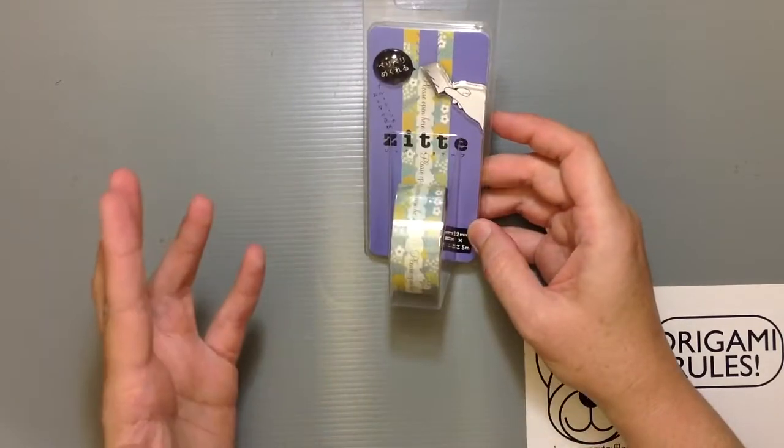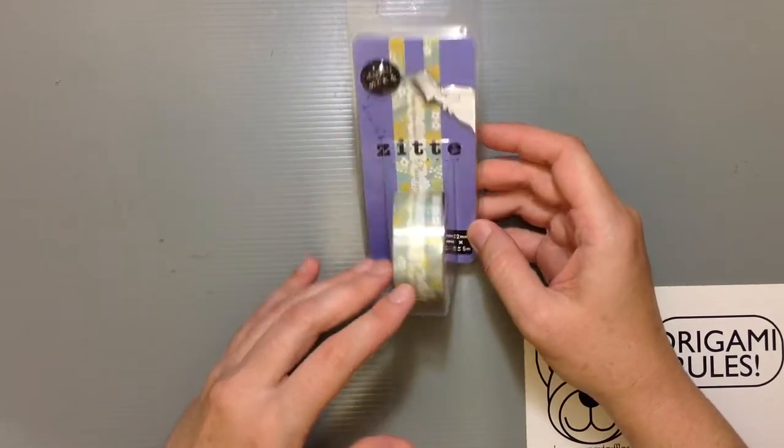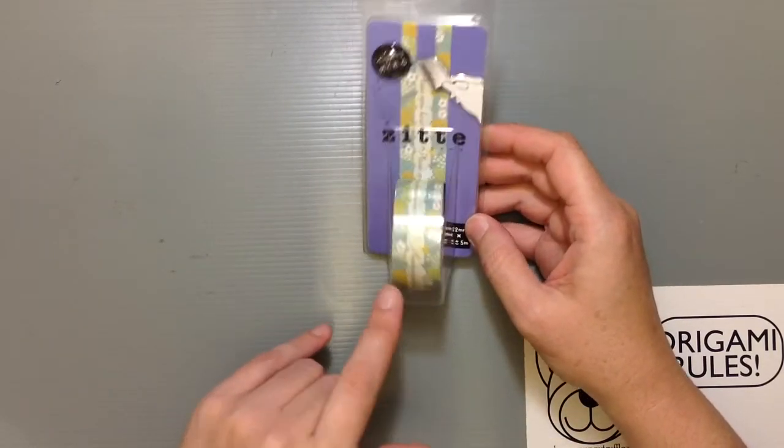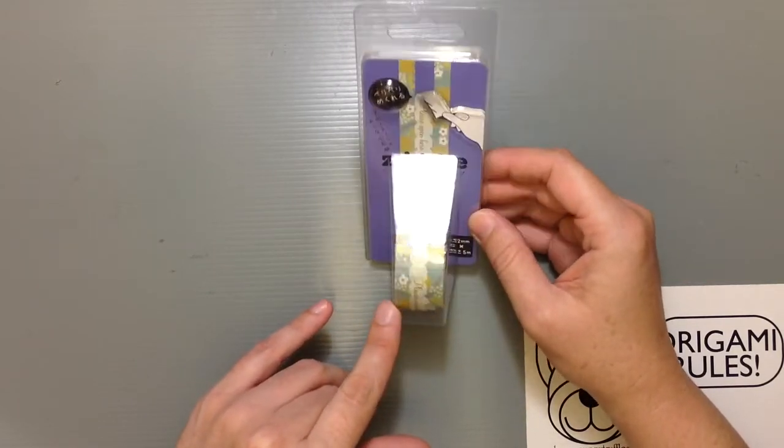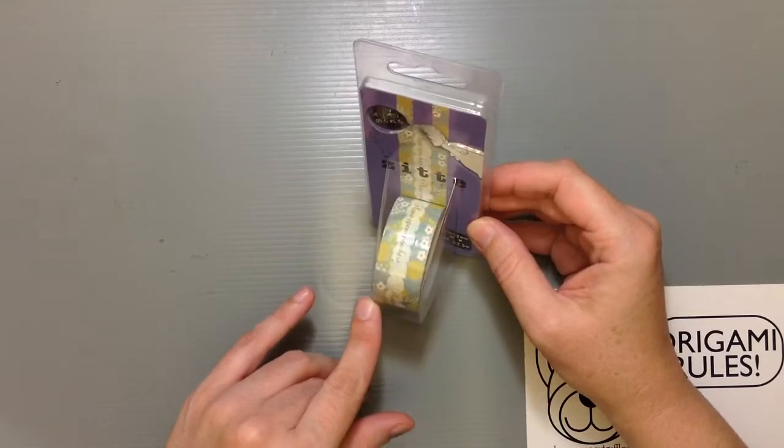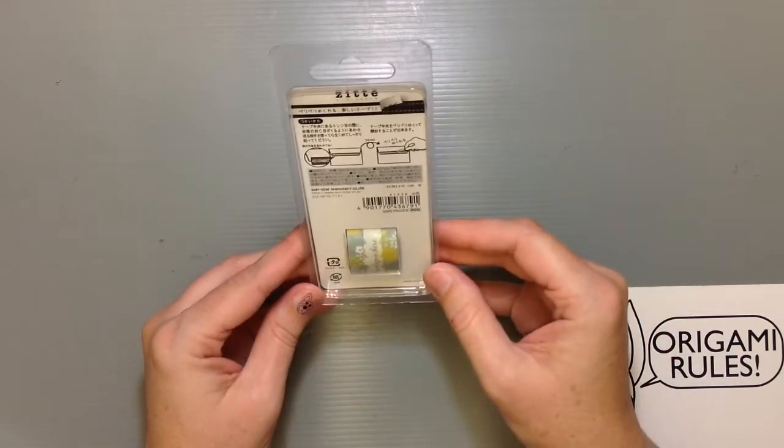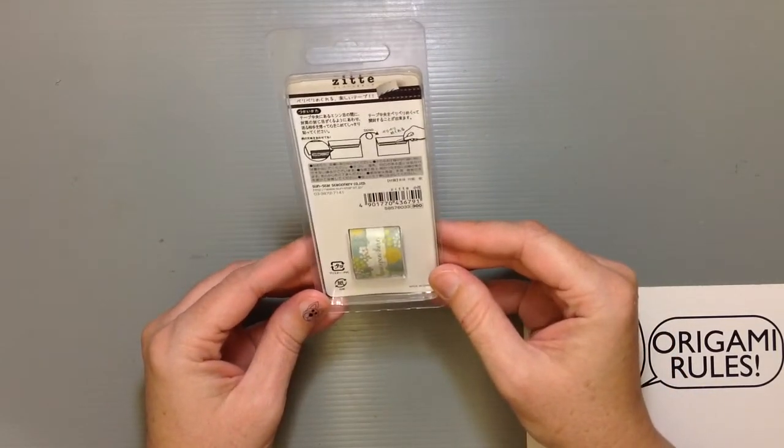And it came, there was like probably 10 or 15 more patterns involved. I just picked this one because it was really pretty. It's called Zitte and it's just this really cute kind of tape here.